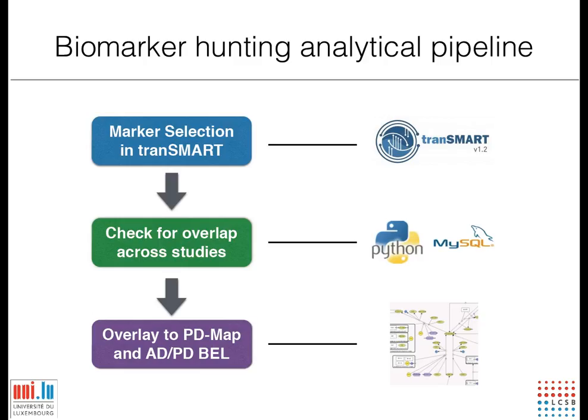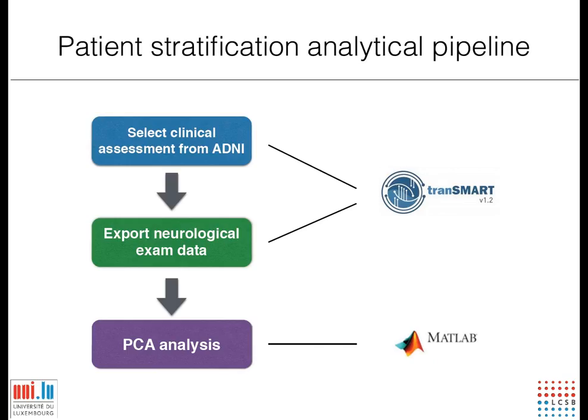Our main objective for the data is to test a few hypotheses — basically three about the molecular markers. We want to test if there are shared markers across different studies in PD, if there are shared markers between PD and AD, and if there are shared markers between tissues. We are also looking at data to find a way to stratify the patient without using any molecular markers. And importantly, we want to test if we can use Transmart as solidly as possible as a tool to answer these questions.